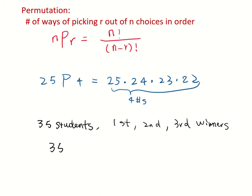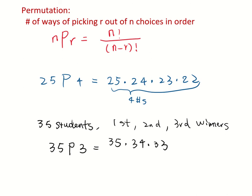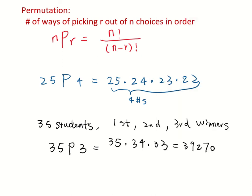So it's 35P3, picking 3 out of 35. And this can be calculated as 35 times 34 times 33. And I just used the calculator. The answer is 39,270. So that means there are actually 39,270 ways to pick the first, the second, and the third winner of the prizes.